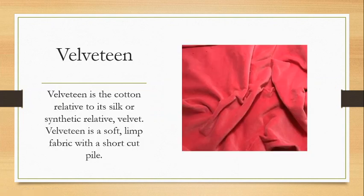Next we have velveteen, which is cotton's answer to silk velvet. When the same fabric is made in cotton, we call it velveteen. Velveteen has a soft, limp fabric with a short cut pile — not too plush or too long, and not looped. So we typically have just a little bit of plushness, a little bit of fullness to the fabric.